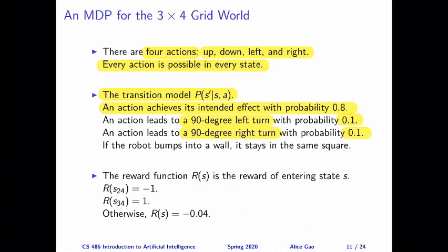In many scenarios, the robot might bump into a wall. In that case, the robot stays in the same square—it bumps into a wall, comes back, and remains in the same square. Let me draw a picture to illustrate how the transition model works. Suppose the robot is trying to go down. With 80% chance, it succeeds. With 10% chance, it ends up going to its left, which is our right. And with another 10% chance, it ends up going to its right, which is our left. The transition model is specified from the perspective of the robot.